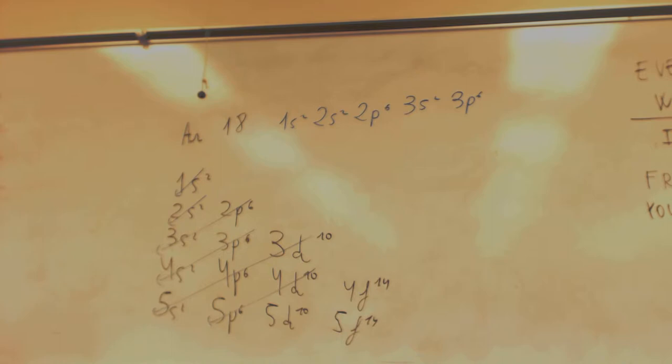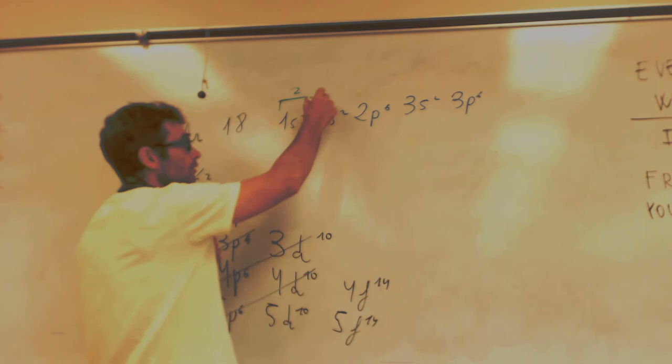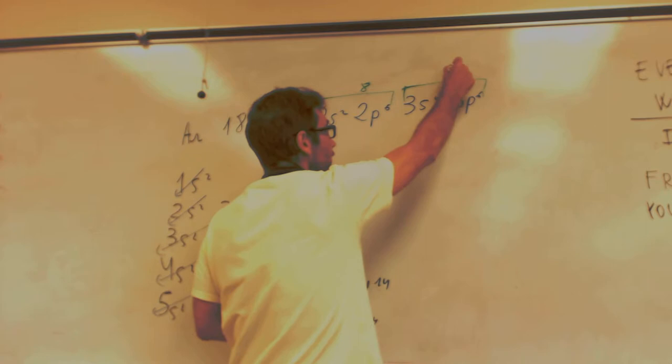And now it's complete. To write the Bohr model you have to add the number of electrons on each level. So here, on the first level you have two electrons. Second level have eight. And the third level have eight electrons, okay?